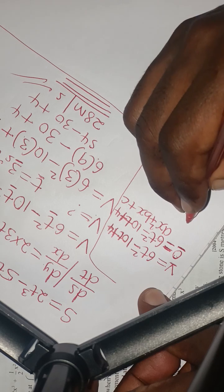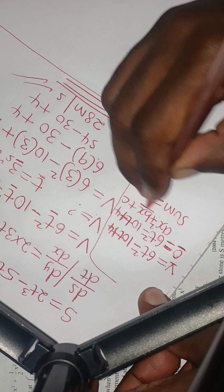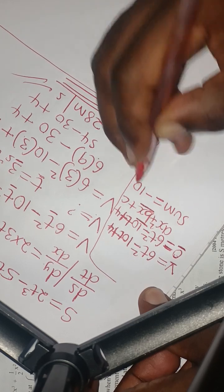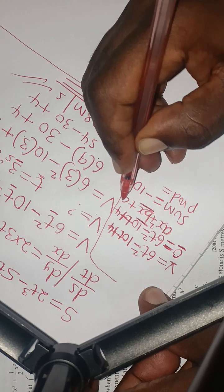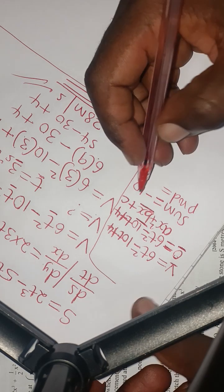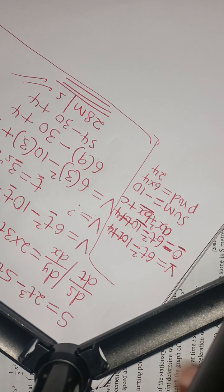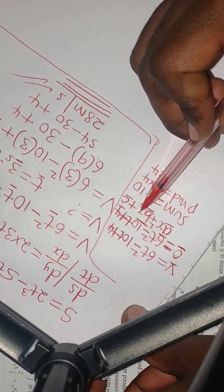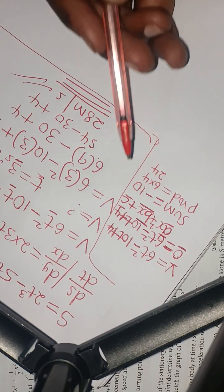Using the sum-product factorization method: the sum equals the coefficient of the middle term, which is −10. The product equals a × c = 6 × 4 = 24. So we need two numbers whose sum is −10 and whose product is 24. The factor pairs of 24 are: 6 × 4, 8 × 3, and 12 × 2.